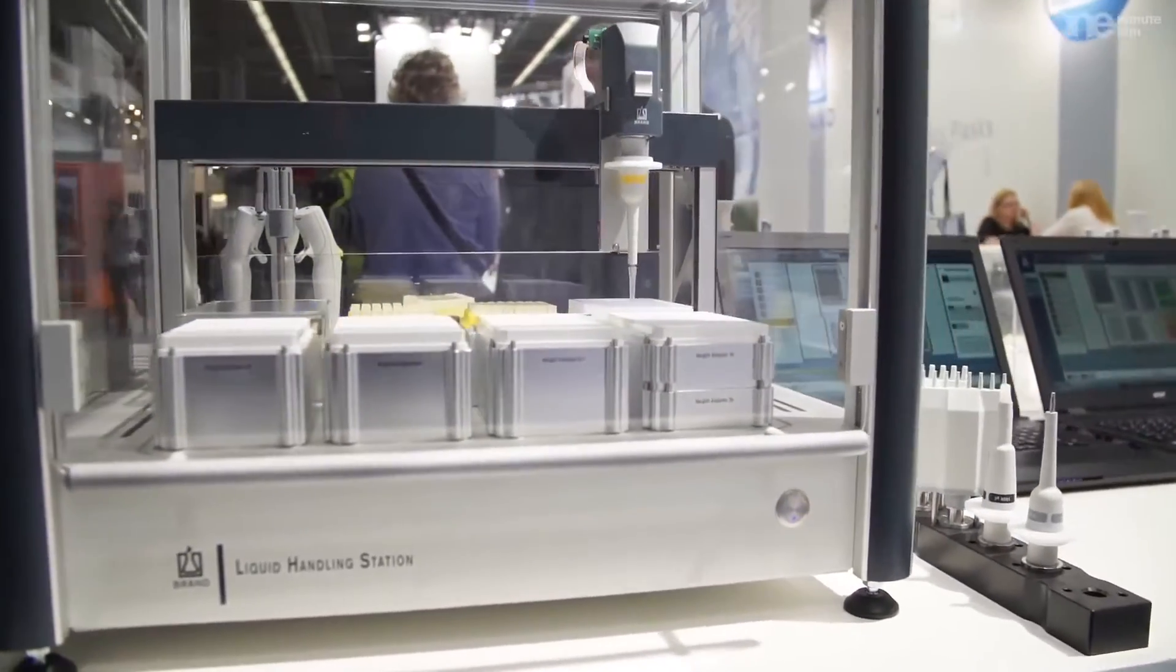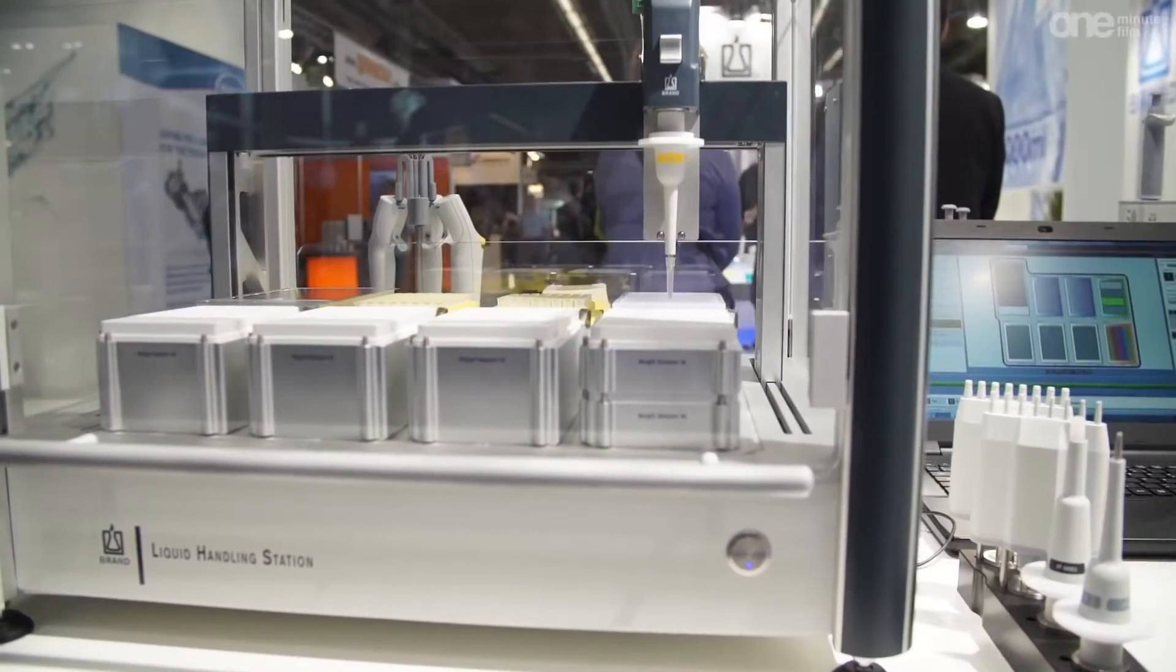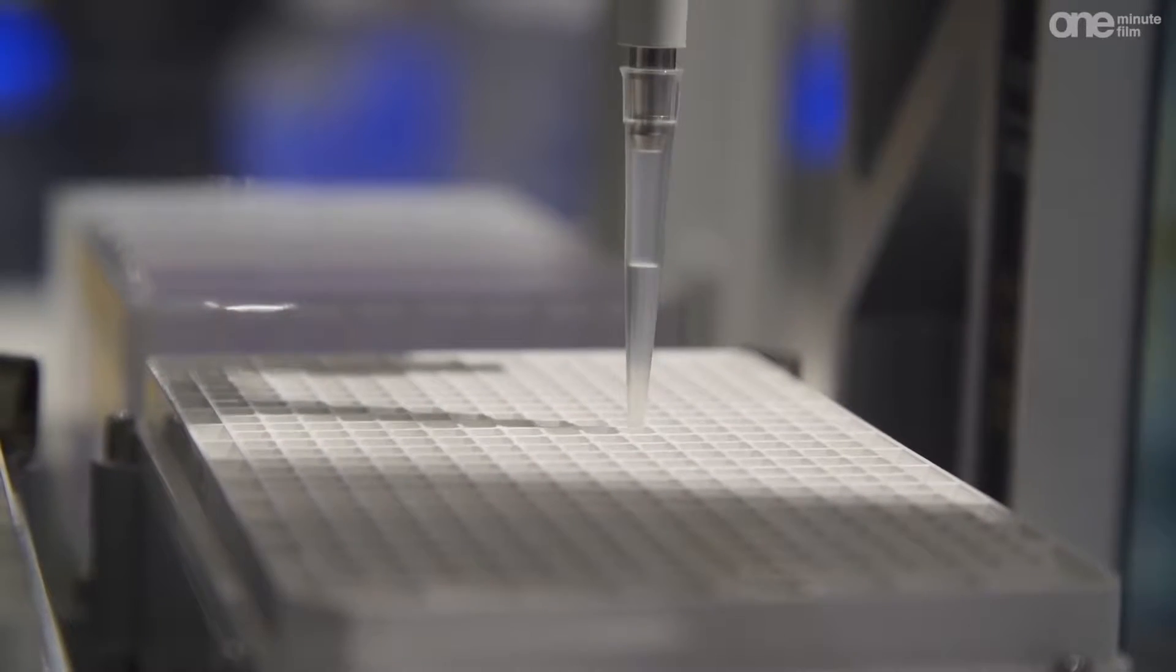The Braun liquid handling station is a pipetting robot for moving liquids in the volume range of 1 microliter to 1 milliliter.